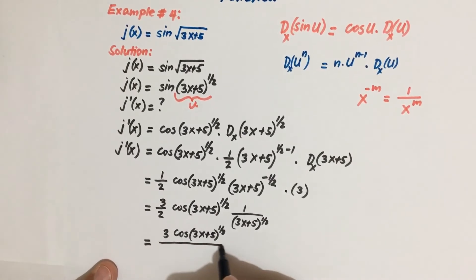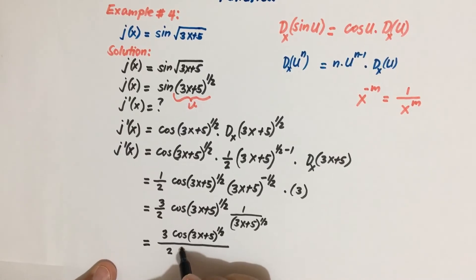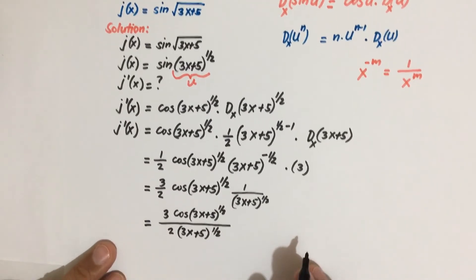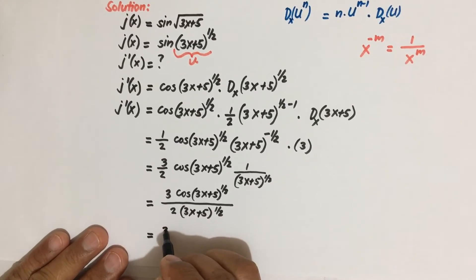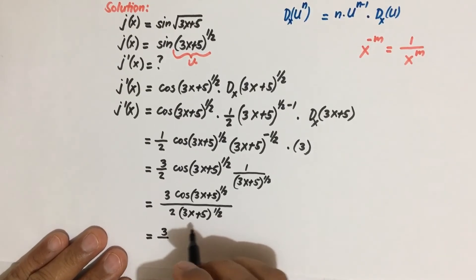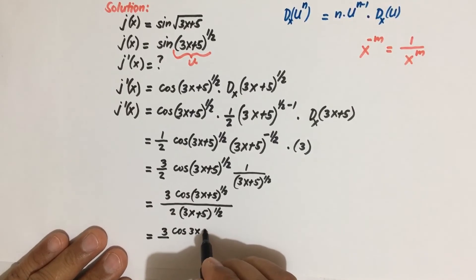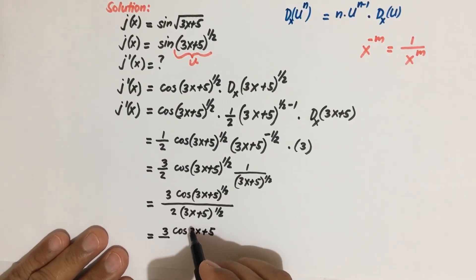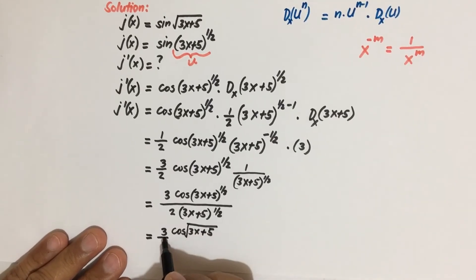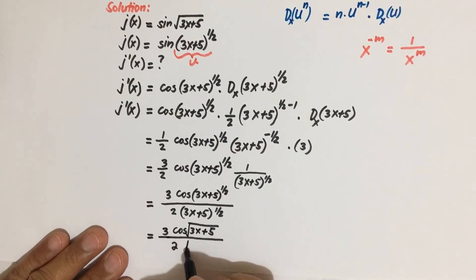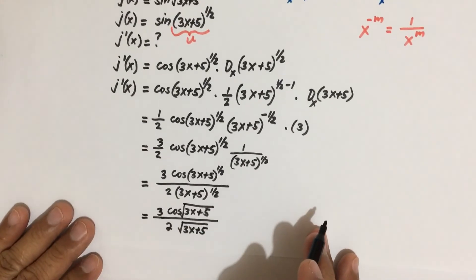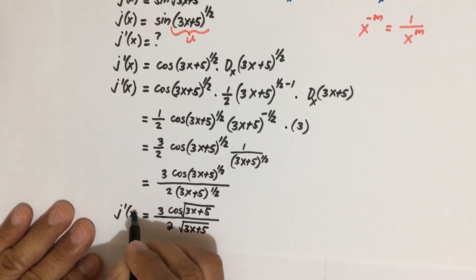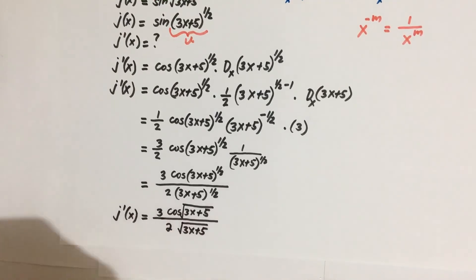Rewriting, we have 3 cosine of 3x plus 5 raised to power one-half, divided by 2 times 3x plus 5 raised to power one-half. Therefore, G prime of X equals 3 cosine of the square root of 3x plus 5, divided by 2 times the square root of 3x plus 5. This is our final answer.